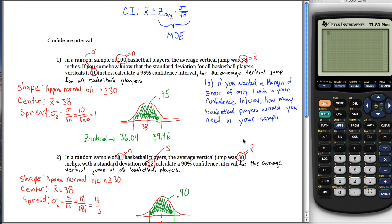So in this specific problem, it's saying make your margin of error equal to 1. Our margin of error is z sub alpha over 2 times sigma over the square root of N. It's given in the problem that that should be equal to 1. So what we have to do is plug in all the things we know, leave N as N, and then solve for N — that'll tell us how many players we need in our sample.